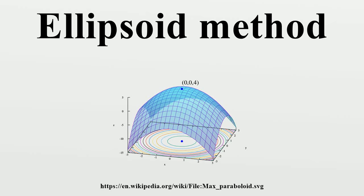When specialized to solving feasible linear optimization problems with rational data, the ellipsoid method is an algorithm which finds an optimal solution in a finite number of steps. The ellipsoid method generates a sequence of ellipsoids whose volume uniformly decreases at every step, thus enclosing a minimizer of a convex function.